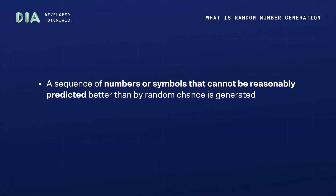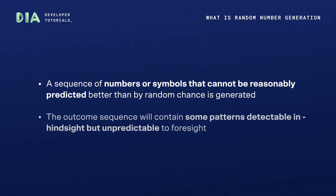Random number generation is a process by which a sequence of numbers or symbols is generated that cannot be reasonably predicted better than by random chance. This means that the particular outcome sequence will contain some patterns detectable in hindsight but unpredictable to foresight.